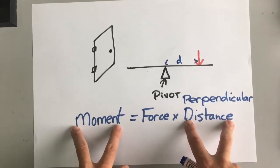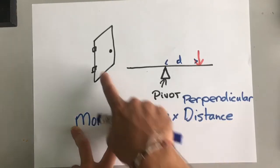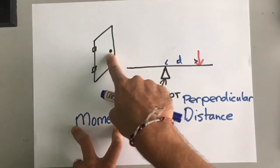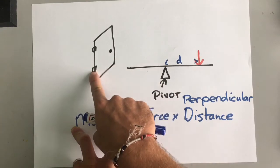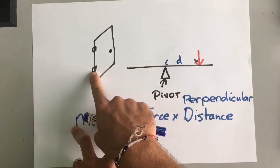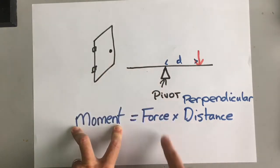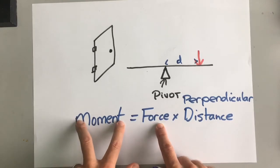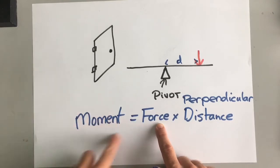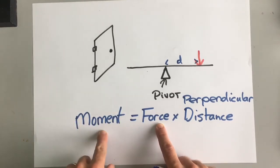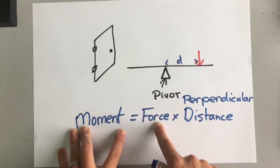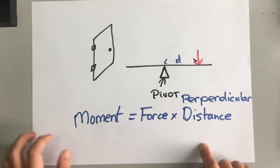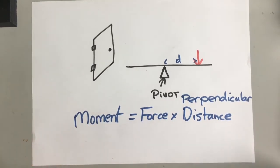The bigger the distance, the bigger the turning force. That's why we put door handles as far away from the hinges as possible — because then it needs a smaller force to open the door. To get the same turning force, i.e. the door opening, we need a smaller force so we don't have to push the door so hard.